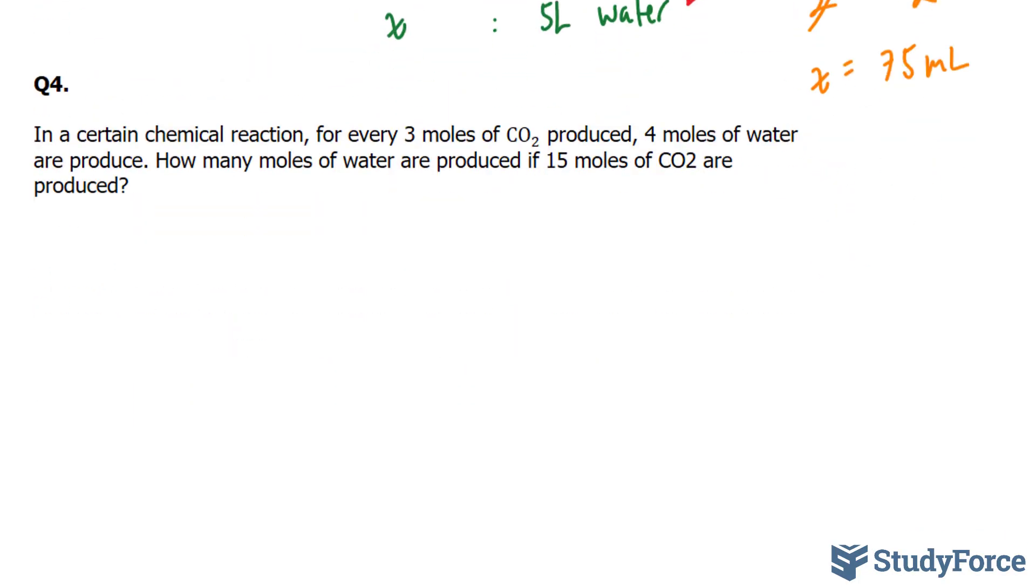In our last example, it reads, in a certain chemical reaction, for every 3 moles of carbon dioxide produced, CO2 represents carbon dioxide, 4 moles of water are produced. So 3 to 4 ratio. How many moles of water are produced if 15 moles of carbon dioxide are produced? Here we can use that first method, because 3 times 5 will give us 15, and 4 times 5 will give us 20.